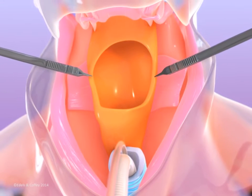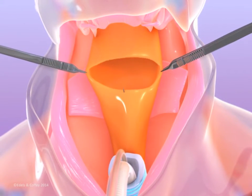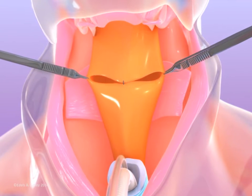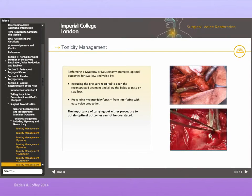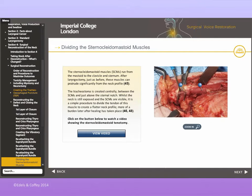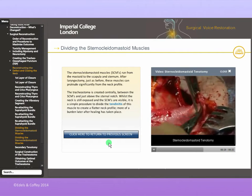Section 4 follows the stages of surgical reconstruction. The pharynx is repaired horizontally. Some additional procedures are included: myotomy and neurectomy, creating the tracheoesophageal puncture, and tenotomy. Live surgical videos are included throughout the module.